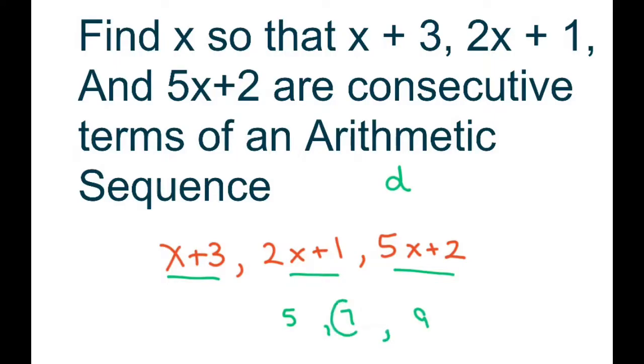but what you do is you take the current term minus the previous term, so that would be 7 minus 5, that gives you 2. Or you could take this term, 9 minus 7, and that gives you 2, so it has a common difference.